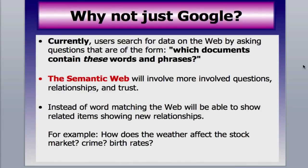Why not just Google? People say the web is fine as it is — I can find anything I want if I do the right search string. But basically, when you're doing a Google or any other kind of search, you're doing phrase matching: which documents contain these words or phrases? That's a very low-level, unintelligent type of searching. What the semantic web does is involve more complex questions, relationships, and trust. Instead of word matching, the web will show how different things relate to each other. You'll be able to see new relationships — how does the weather affect the stock market, or how does the weather affect crime or birth rates?